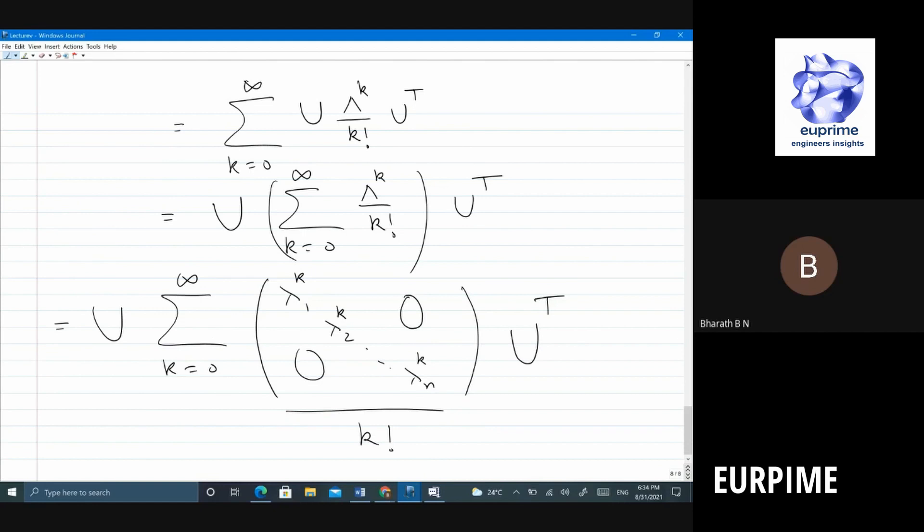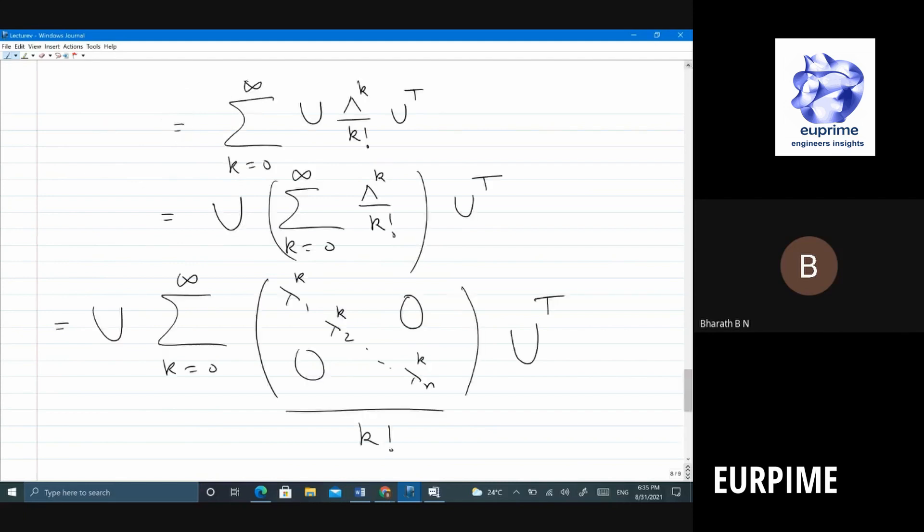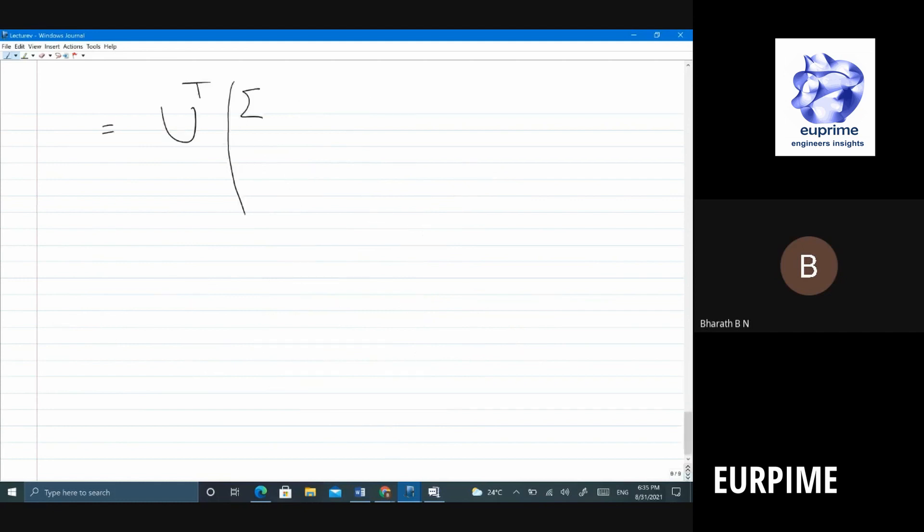Now I can pull the summation inside. Sum of a matrix is nothing but sum of each individual terms. Right? So I can do this. So this is U transpose matrix. Essentially what is happening here is, you know, you have summation lambda 1 power k, k factorial. What is that? Okay, I won't write it here further. So we will just figure that out here itself.